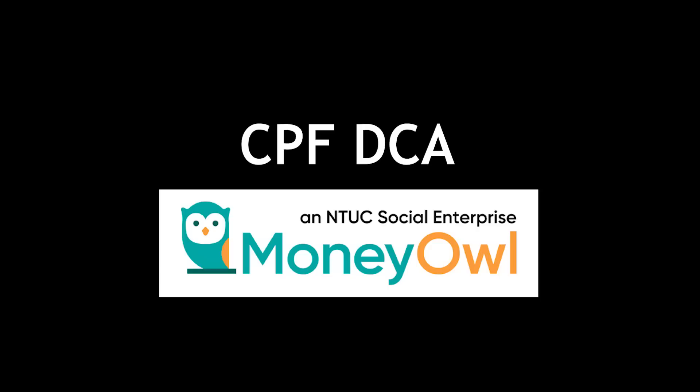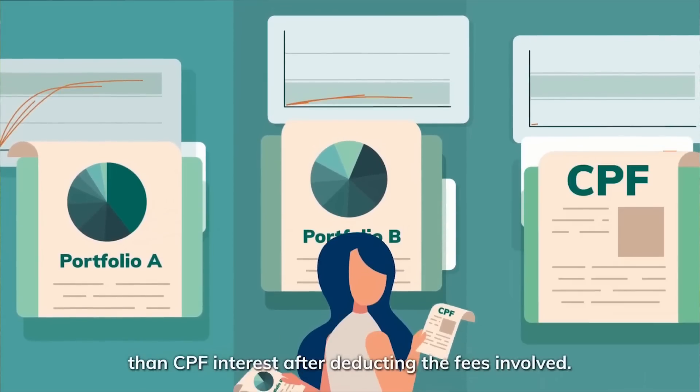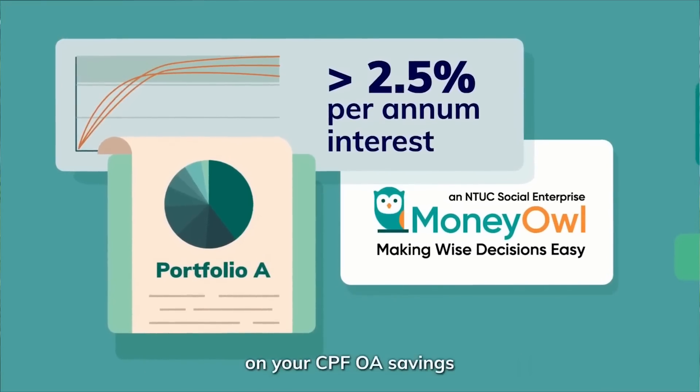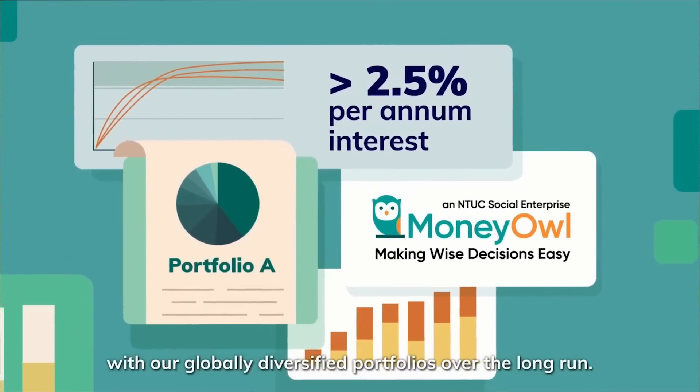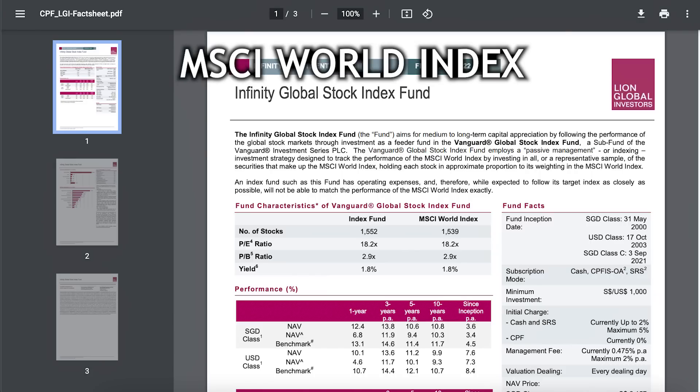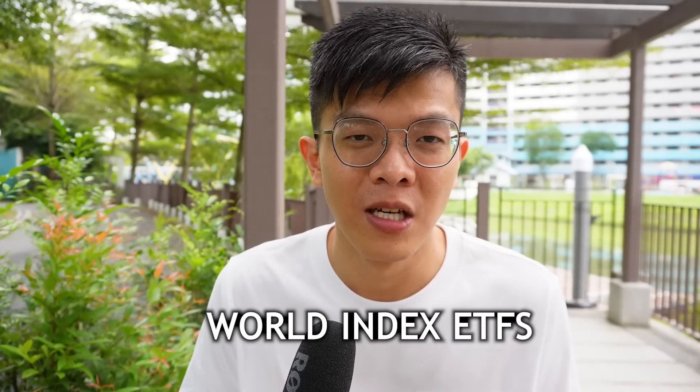This automated DCA strategy suits me, but it may not suit you if you want to time the market. First up, let's talk about CPF investments. One of my CPF portfolios is with MoneyOwl, which recently introduced their CPF portfolios. I wanted to dollar cost average one thousand dollars into their 100% equity portfolio, which invests in the Lion Global Infinity Global Stock Index Fund Class C SGD — a unit trust that tracks the MSCI World Index, consisting of companies from the US, Europe, and around the world.